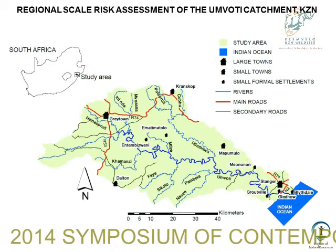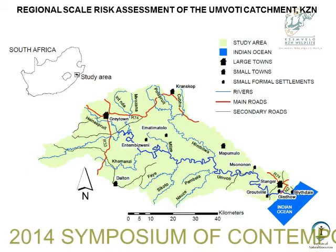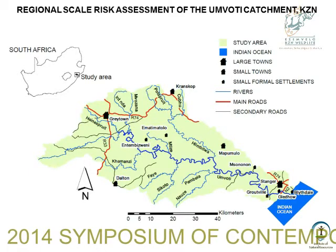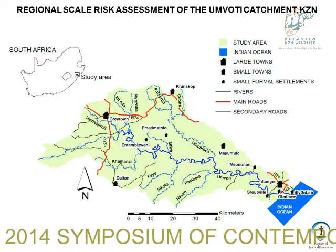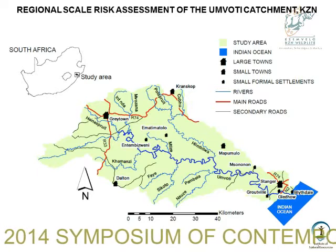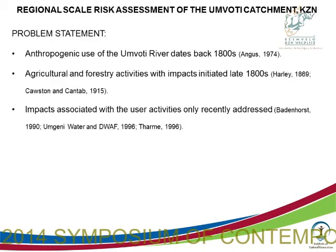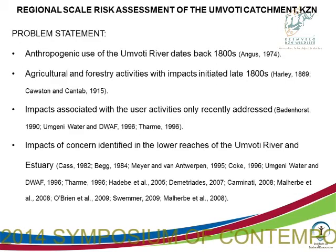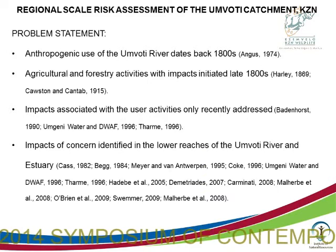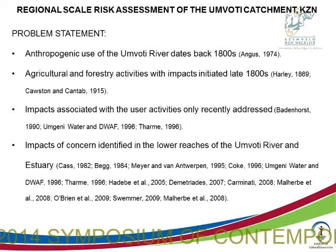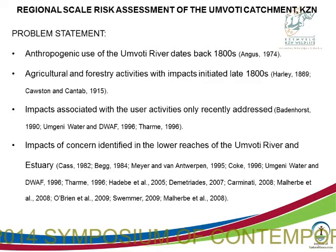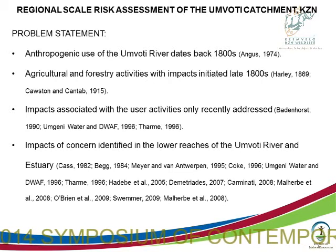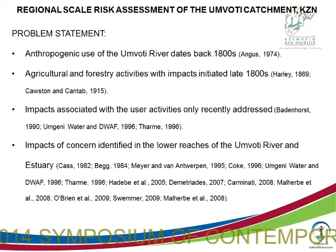This is the Votie case study — from Greytown right down to Stanger. We have a lot of information: we know about anthropogenic impacts, agriculture, forestry, industries, and water stress where the demand for water exceeds supply. The focus is on the lower part of the catchment. And whenever people say whatever you do doesn't get into the public domain, if you go write a list of recommendations made to manage the Votie River, there are pages and pages of recommendations and very few have ever been addressed.